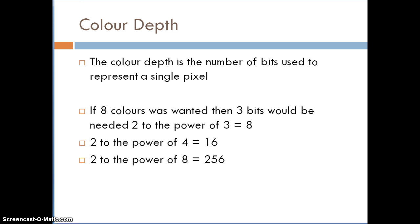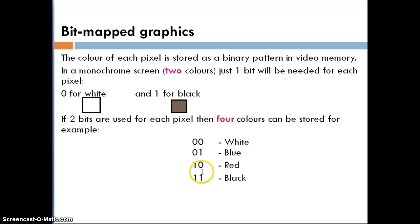That continues to move up just like the powers. If you wanted 1024 colors, you would use ten bits per pixel. The reason is, each bit pattern, again looking at two bits, each bit pattern 00, 01, 10, 11, each bit pattern represents a different color.